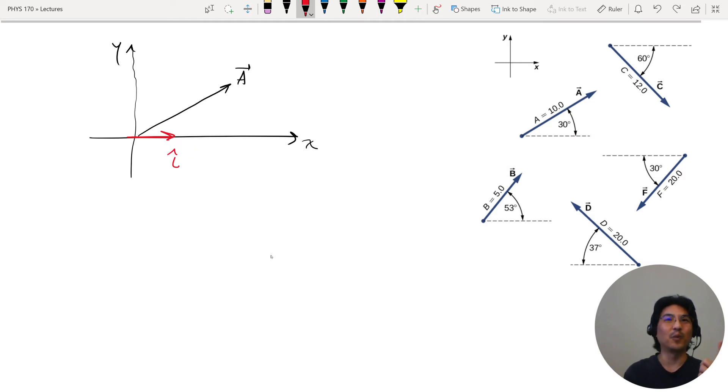It has a magnitude of 1, and the unit vector in the x-direction is always called i, the unit vector in the y-direction is always called j, and then in the z-direction is called k.